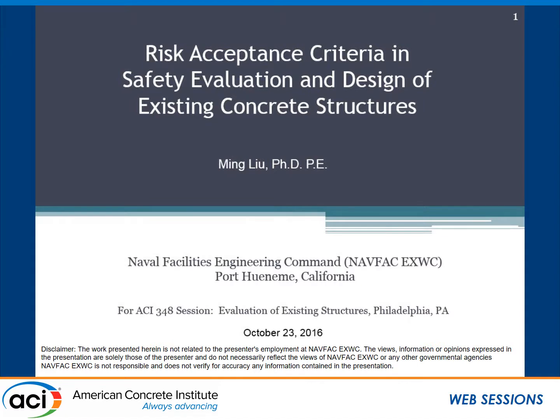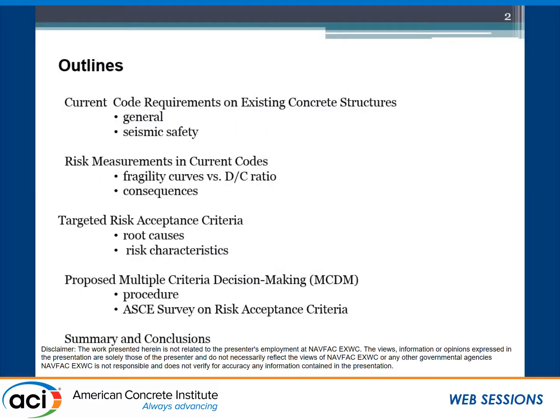Today's talk is about how we pick up the risk acceptance criteria when we deal with existing structures. The target reliability is an open issue — it's a very controversial topic. People have different opinions. We'll look at the current code requirement for existing structures, the risk measurement in current code, and proposed target criteria — some of which are very academic and not practical. And finally, results from an ACI survey I did a couple years ago to see what practical engineers are doing related to how you set up the risk acceptance criteria.